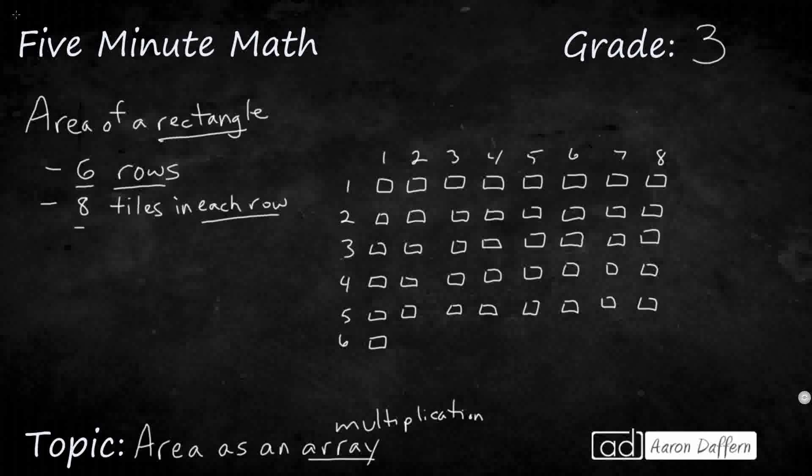One way to think about finding the area is to use an array, and that means to use multiplication. So here is our array. You notice I've got one, two, three, four, five, six rows. And each row has eight tiles. One, two, three, four, five, six, seven, eight. Now, here's my rectangle. So there's my rectangle.